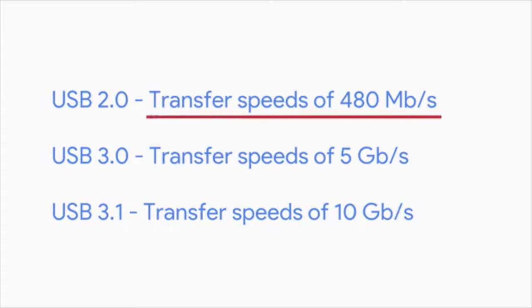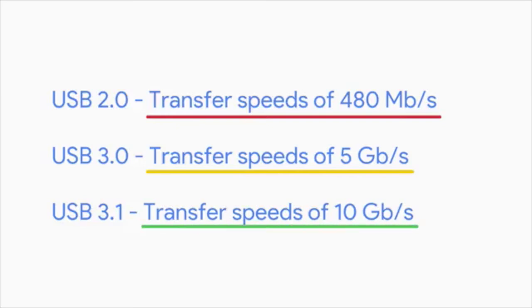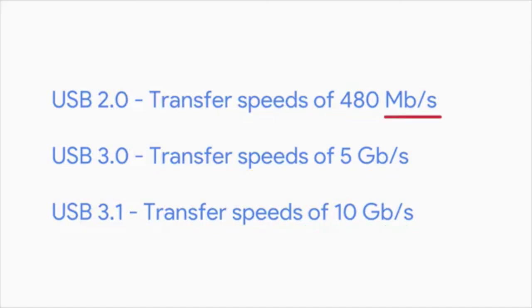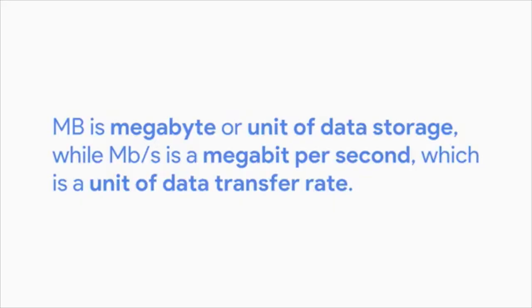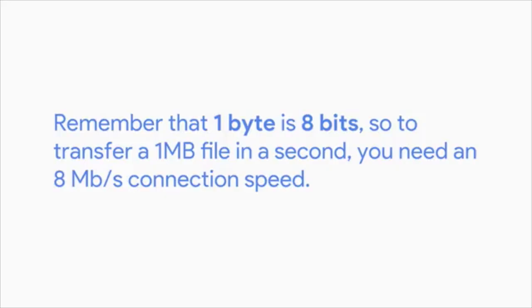When reading transfer speeds, pay attention to the details: capital M, lowercase b, forward slash s — megabit per second — is a unit of data transfer rate, while MB is megabyte, a unit of data storage. People often mistake 40 megabits per second to mean you can transfer 40 megabytes of data per second. Remember that one byte is 8 bits. So to transfer a 1 megabyte file in a second, you'll need an 8 megabits per second connection speed. To transfer 40 megabytes per second, you'll need a transfer speed of 240 megabits per second.